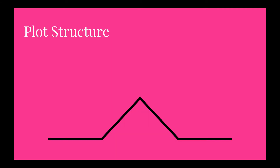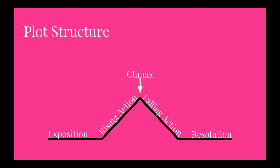Here's a plot structure that shows how conflict drives stories forward. This is an example of a really basic plot structure that a lot of people call the witch's hat, and it's made up of five elements: exposition, rising action, the climax of the story, falling action, and then a resolution.